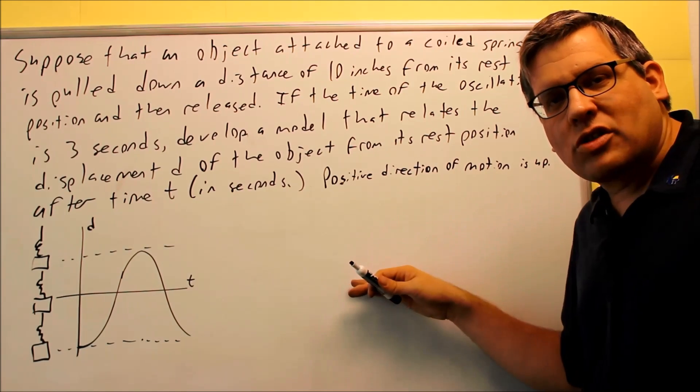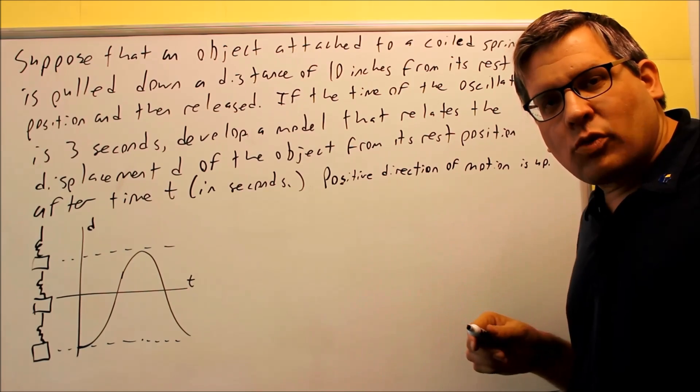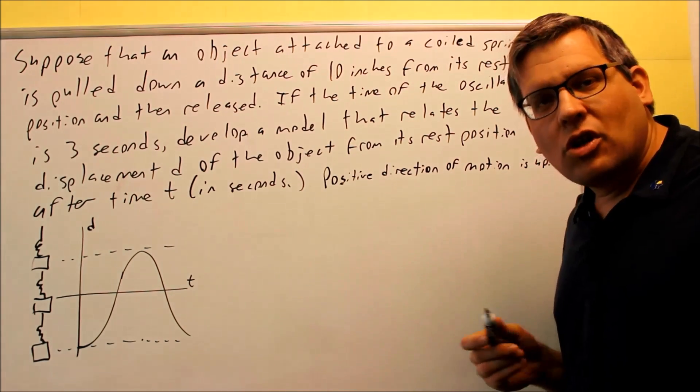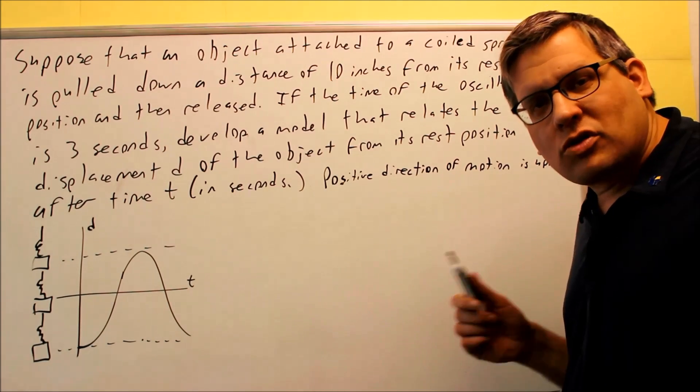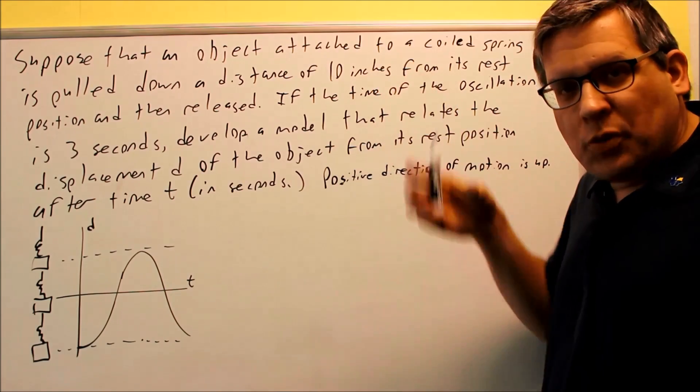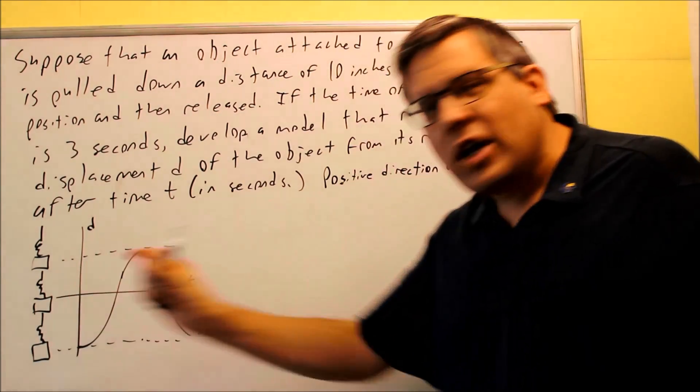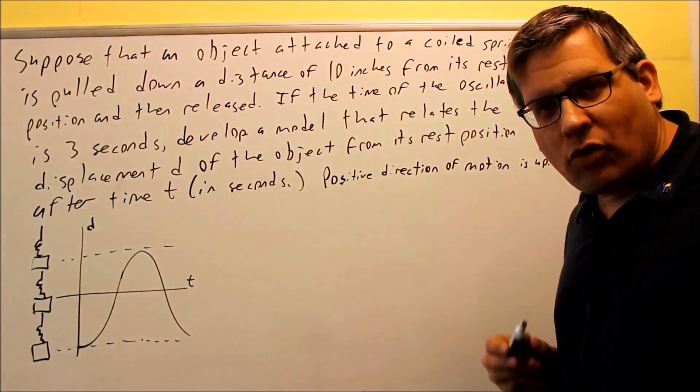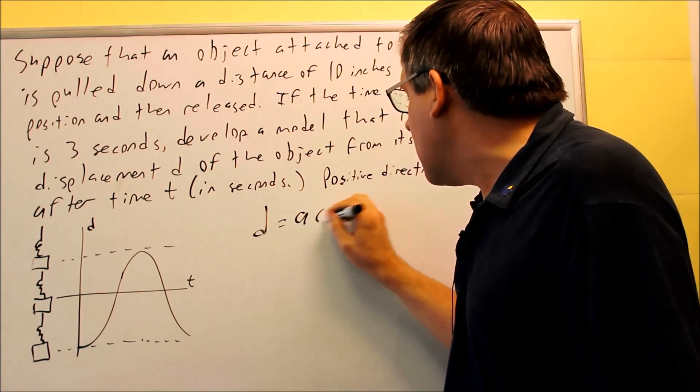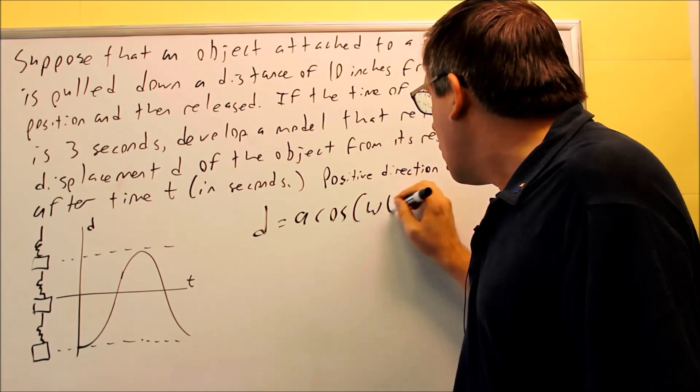In the first video, introduction video, we have two different models. We have d cosine or we have d sine. We have to choose which one of those base models we want to start with. In this particular problem, the whole experiment begins by pulling the weight down 10 inches. So therefore, the one I want to use is this one. I want to do a cosine omega t.